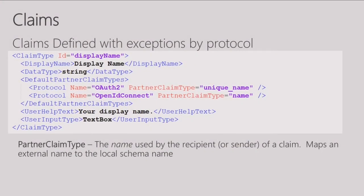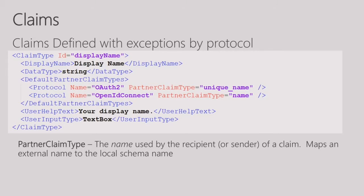If you open the starter pack, this is how a typical claim definition looks. This is a display name claim type — used to capture how the user wants their display name to show up, typically different from their legal name. This claim is stored in the directory. When a user signs up or signs in, we collect it from the user — there's a page that shows up and the user types a display name. It can also sometimes be retrieved from other identity providers like Facebook or Google.